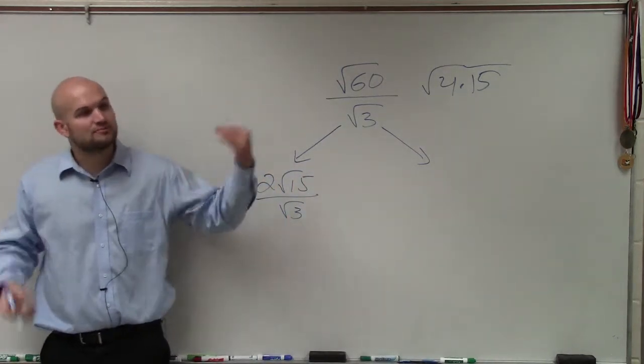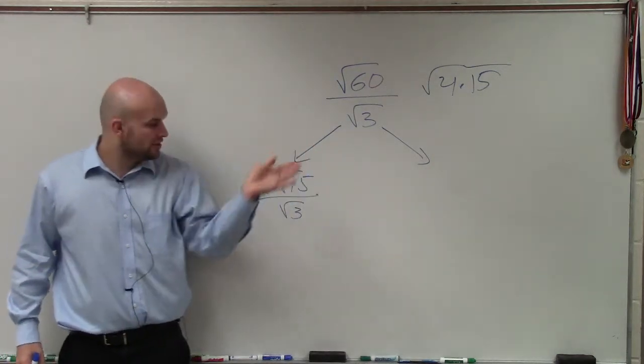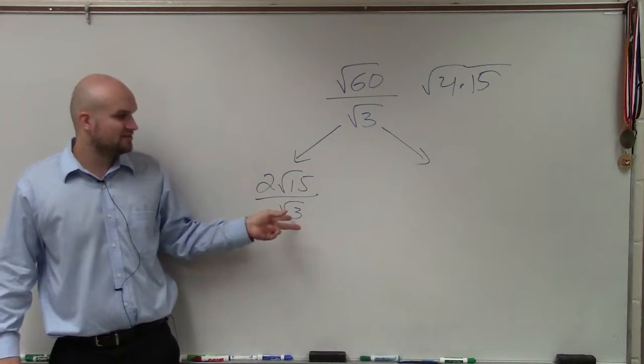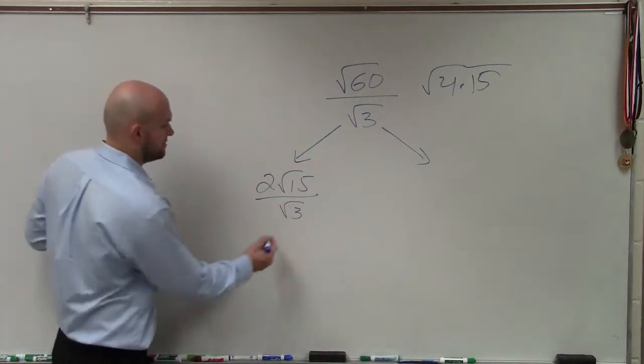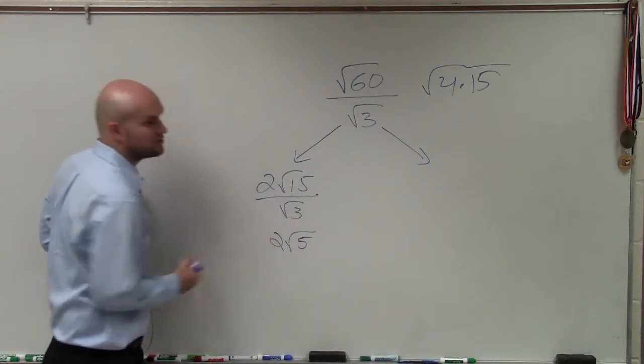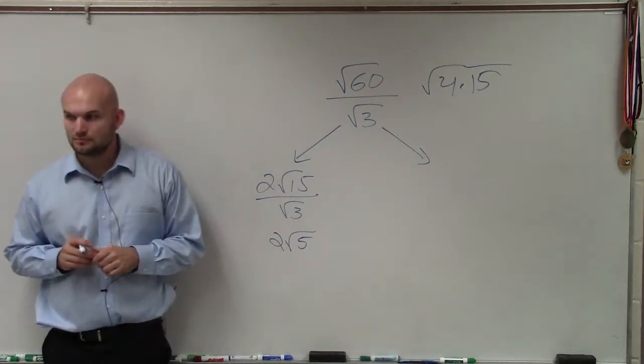Now, what I told you guys is when we're dealing with multiplication and division, we can divide our radicands into each other. So √15 divided by √3... 2√15 divided by √3 would be 2√5.